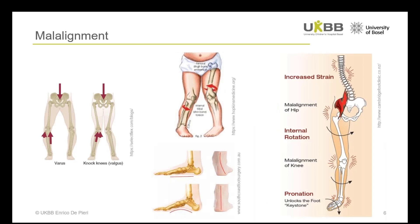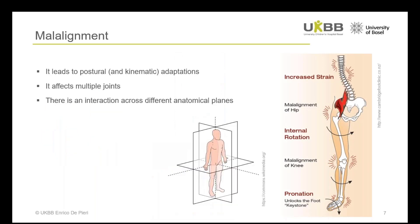However, knee varus or valgus alignment are not the only types of malalignment thought to cause increased loads in the lower limb. Other abnormalities in musculoskeletal morphology, such as flat feet deformities or rotation of the tibia and femur, can lead to a series of postural and kinematic adaptations and potentially overloads throughout the musculoskeletal system. The effect of malalignment spans multiple joints and manifests across different anatomical planes, making it quite challenging to understand.